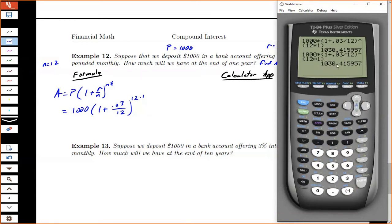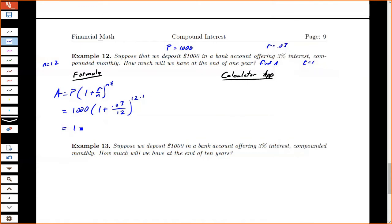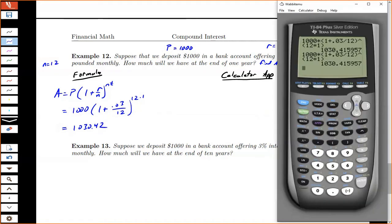So we get $1,030, and if I round to the nearest cent, we'll have 42 cents. I'm going to change that mode back.